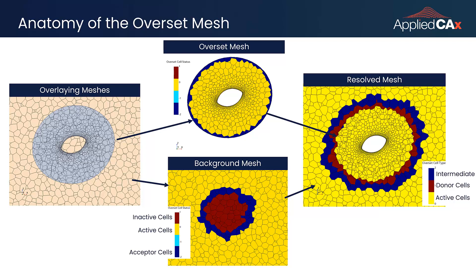If we look at the status of the background mesh cells, we see everything far away from the ball is active and is calculating the flow information, but the cells underneath the Overset Mesh are turned off. When we reassemble both these meshes together in the far right, we see the overlapping boundaries of the Overset and Background Mesh are identified as donor and intermediate cells that transfer information between these two meshes through an interpolation scheme.